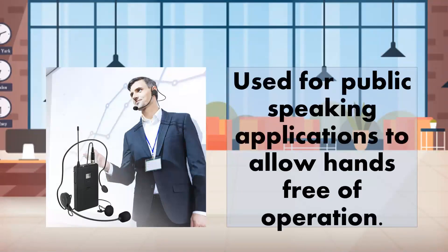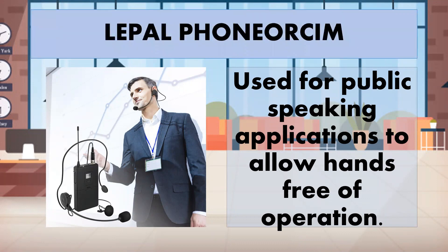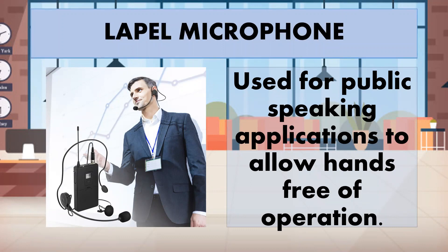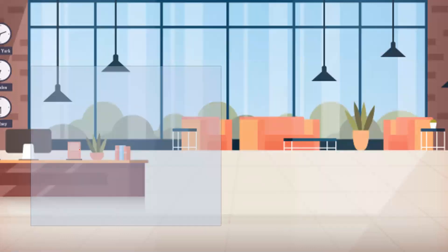Next, what I want you to look at is the tool or paraphernalia being worn. It is used for public speaking applications to allow hands-free operation. Teachers used this when teaching — the blue device with an orange piece attached to the body. That is called the lapel microphone, so the teacher's voice is amplified without straining the throat. The part near the mouth is the microphone, and the device attached to the body is the lapel microphone.